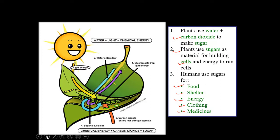What information can we get from discussing photosynthesis? Plants use water and carbon dioxide to make sugar. Water and carbon dioxide are the reactants, and sugar is the product.